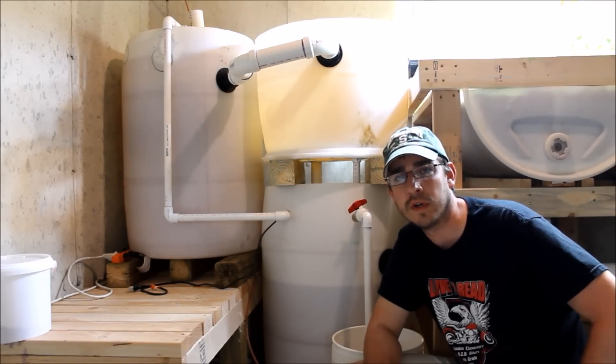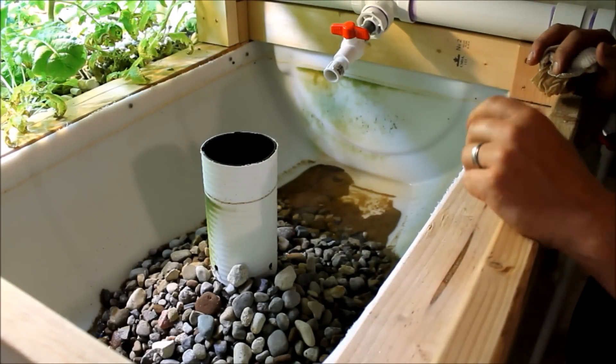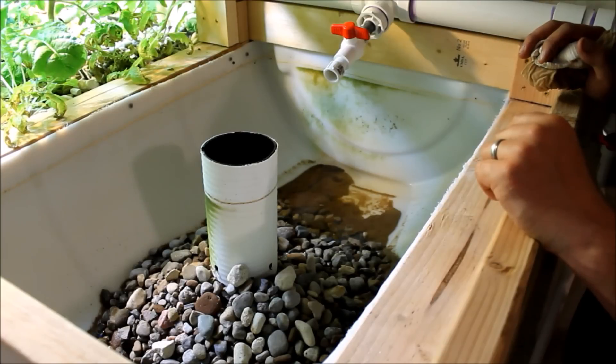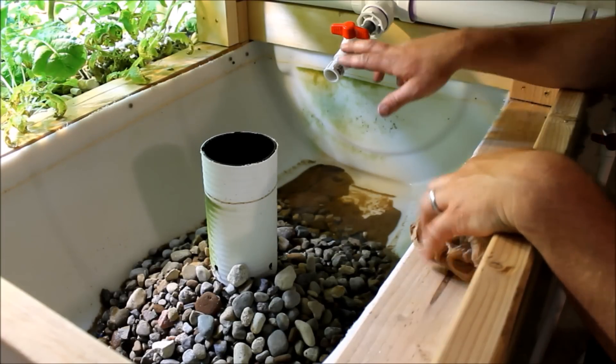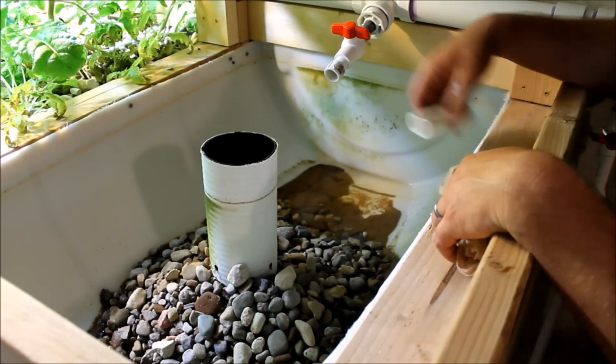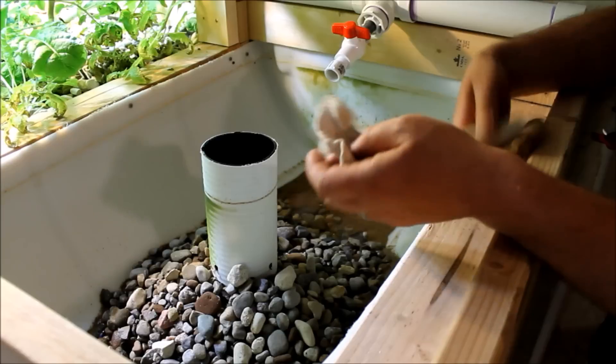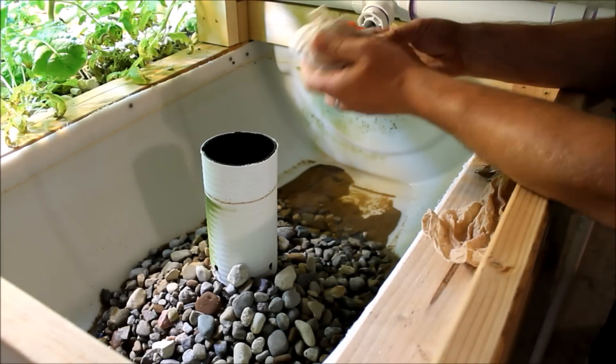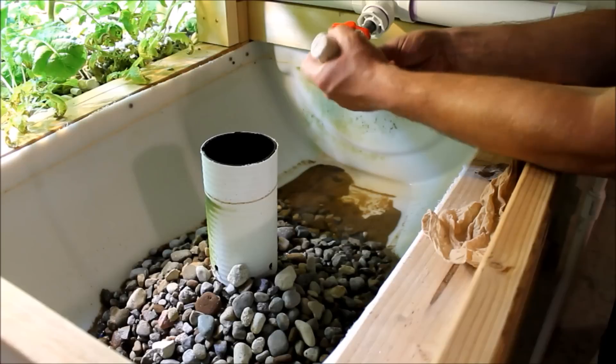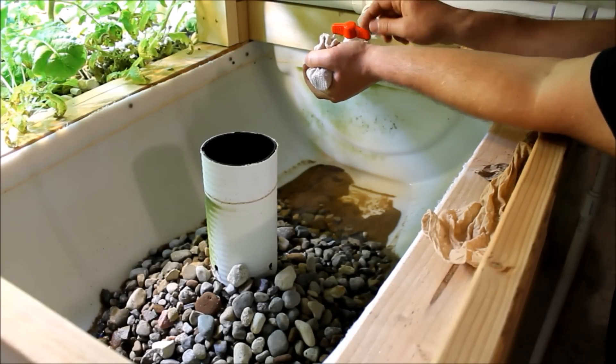When we first set up the aquaponics system, I really didn't have any way of taking solids out of the system or filtering the water at all. On each one of these fill pipes, I had a little standpipe, a little extra piece of PVC pipe, and I was just using extra rags, old socks, and basically rubber banding it around each one of the grow bed fill pipes. I had to clean these out every couple days.